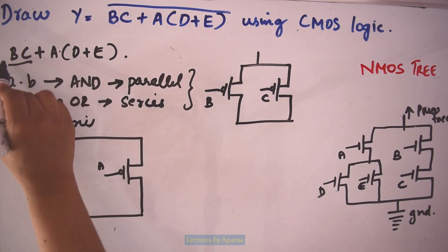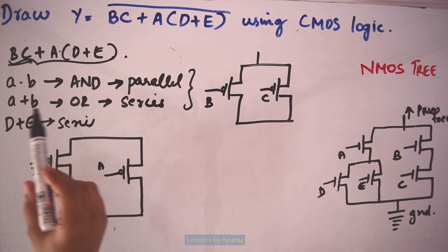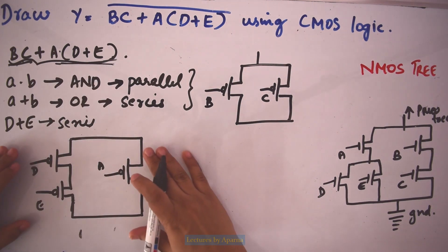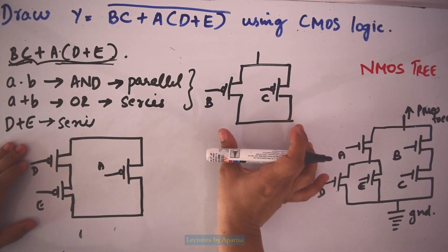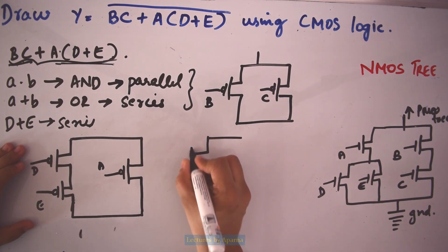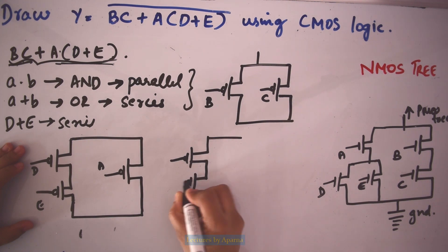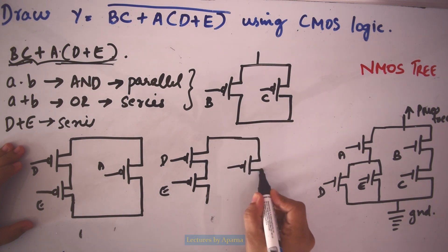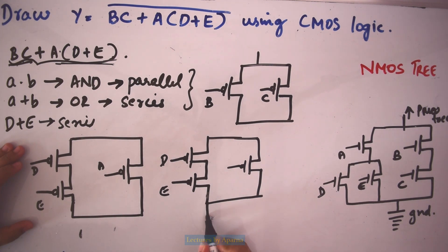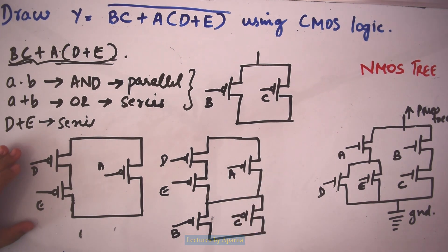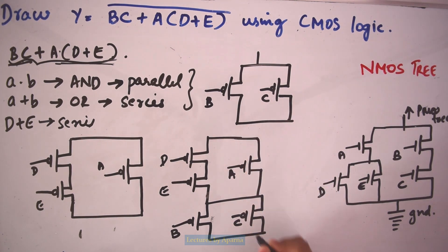Next we have to combine these terms — there is an OR operation between BC and A into (D plus E). So BC is in series with the A into (D plus E) block. So I connect the BC parallel combination in series with the A into (D plus E) section. This gives the complete PMOS tree, where B, C, A, D, and E are arranged accordingly.